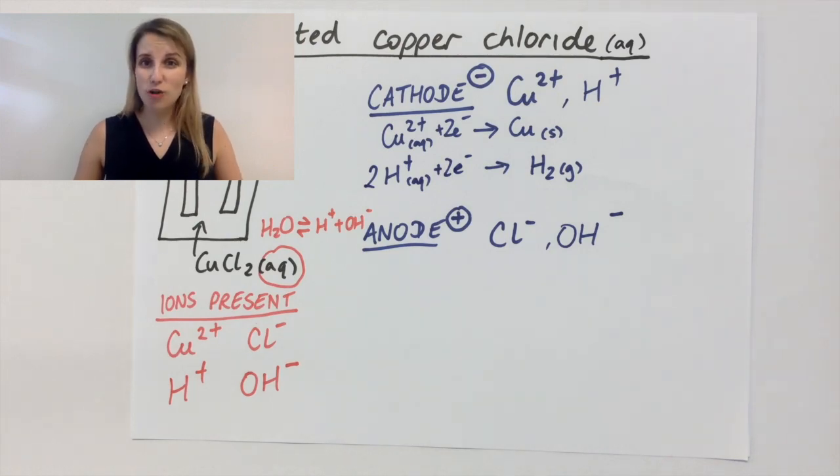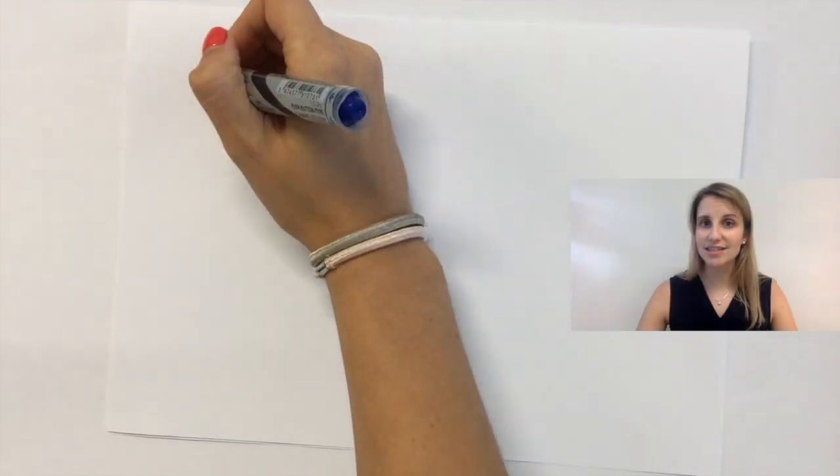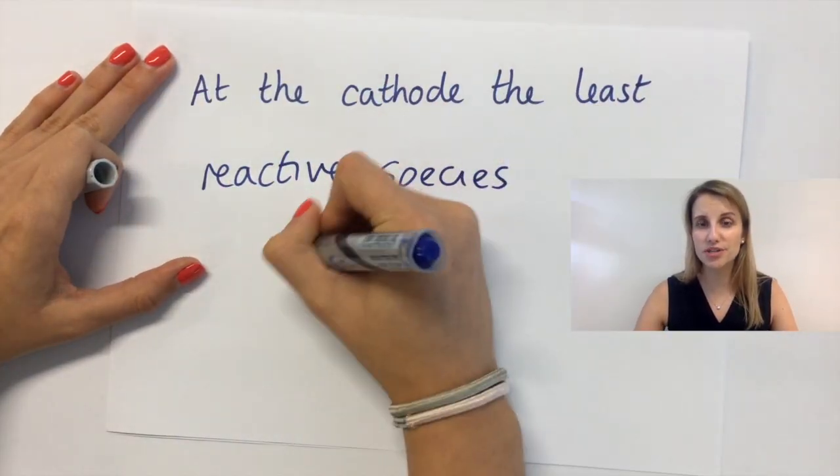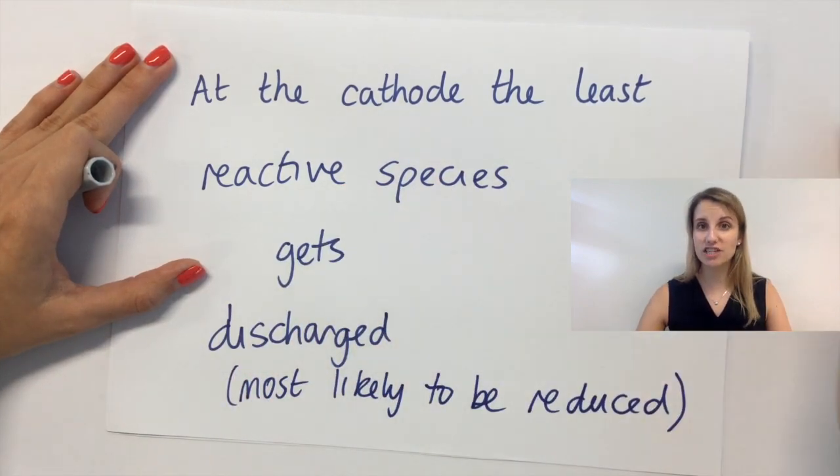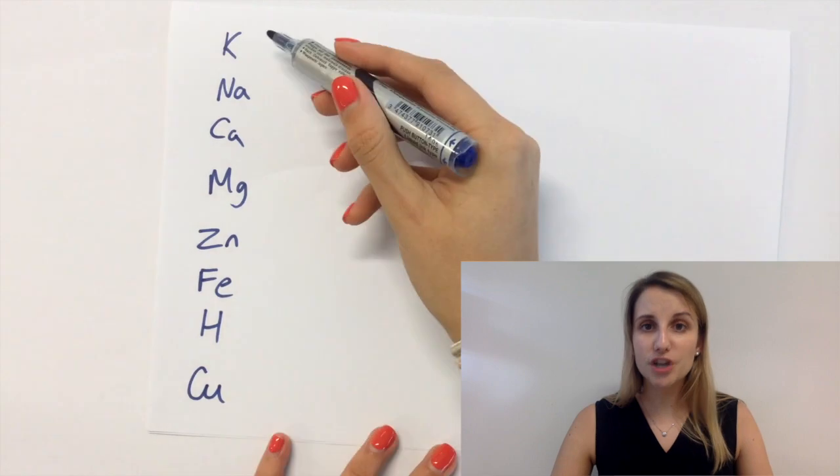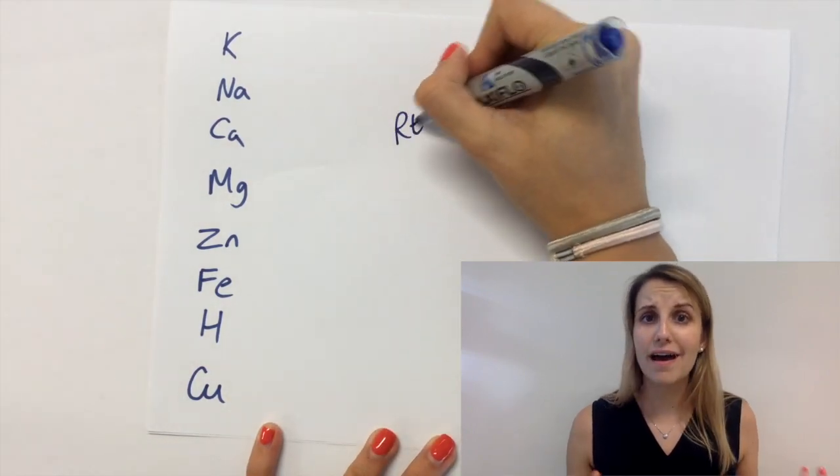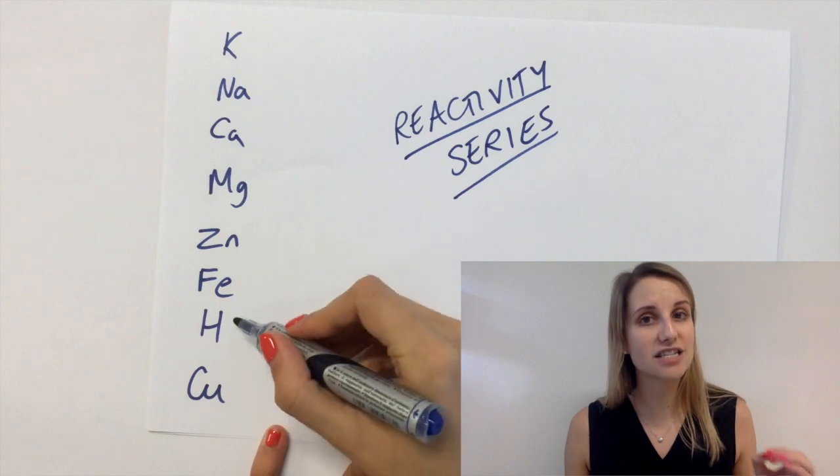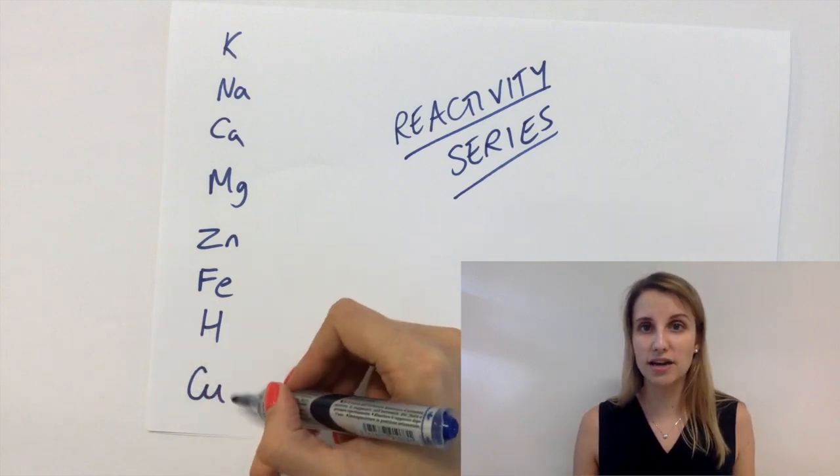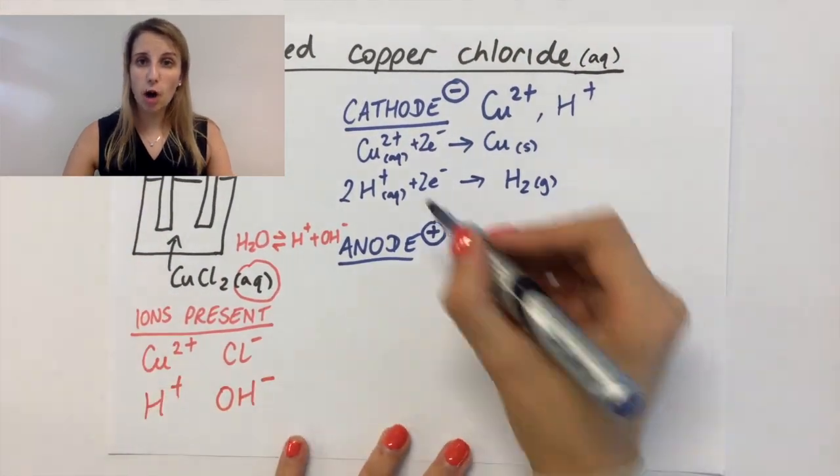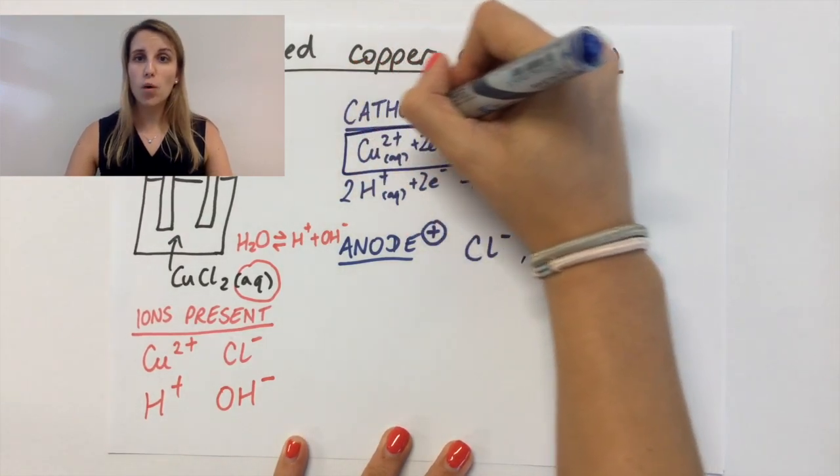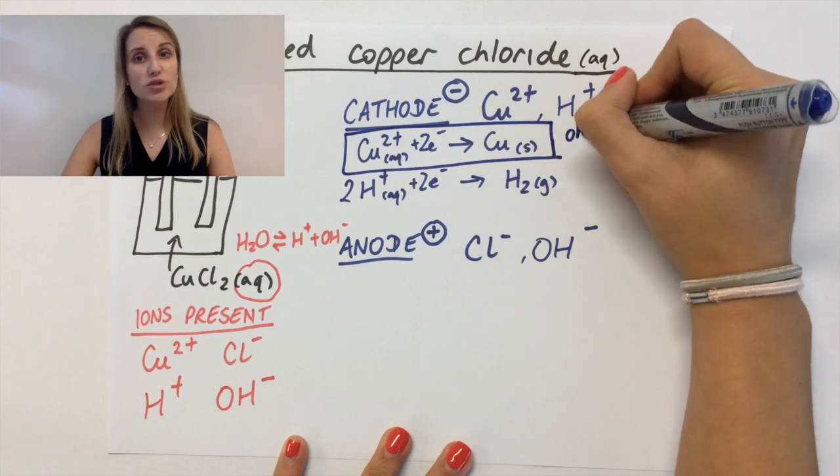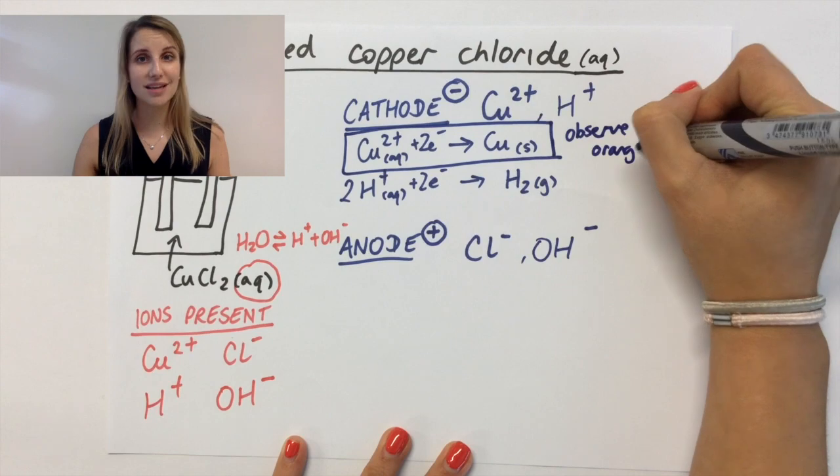So the real question is, how do I decide which of these two things happens? Here's the answer. So the one that's most likely to be reduced is always the least reactive one. So the least reactive one will always be produced at the cathode. Here's a reactivity series that I prepared earlier. The two elements that we're comparing today are hydrogen and copper. And what you can see here is that the hydrogen is more reactive than the copper. The rule is that the least reactive one always gets discharged. So that must mean that the copper gets discharged in this case. If we go back to our original question, that means that it's the copper equation that definitely does happen and I can cross out the other one. What that means is that you'd see that electrode being coated with an orange solid, which would be the copper metal coating the electrode there.